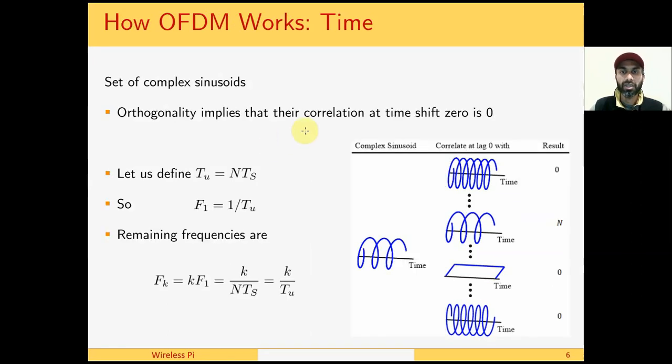Orthogonality implies that the correlation at time shift 0 is 0. This is best seen with the correlation between this and this. This is the constant, so correlation just implies the sum of all the samples, and the sum of all these samples in one cycle is 0. As you know, the area under the curve of a sinusoidal wave is half cycle negative, half cycle positive, and the area is 0 whenever there is an integer number of cycles. So, if we define the frequency of the first complex sinusoid, which in the case of OFDM is called subcarrier as f1, then the remaining frequencies are kf1. So they are all integer multiples of a fundamental frequency.